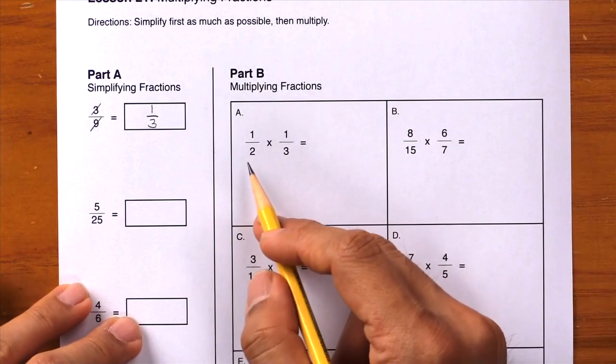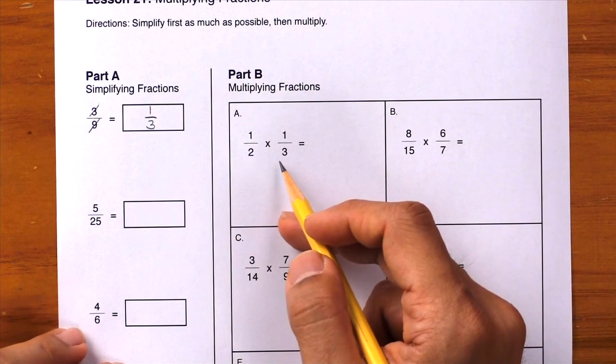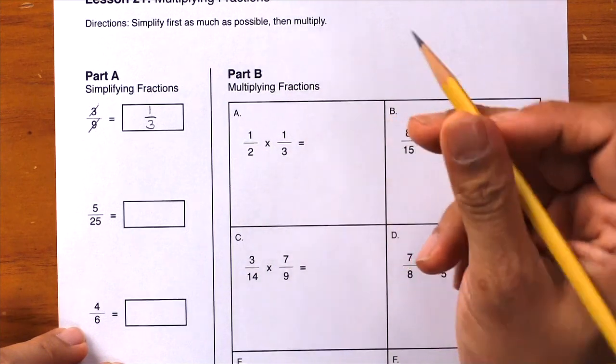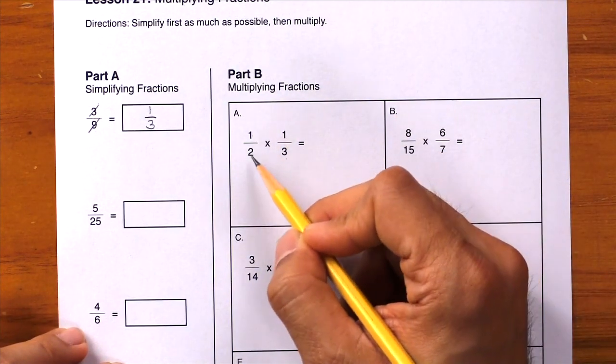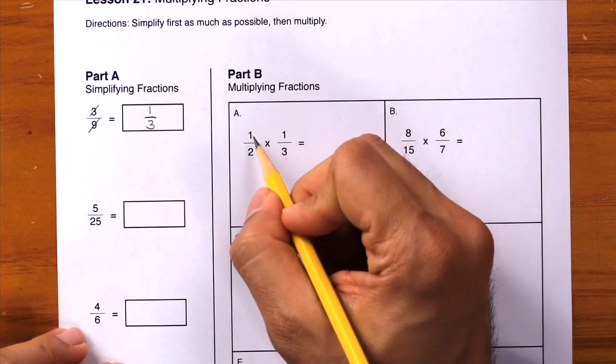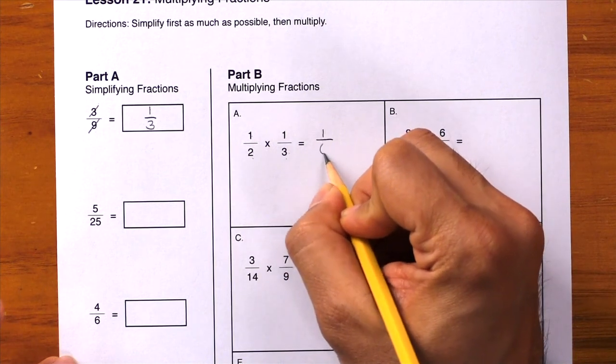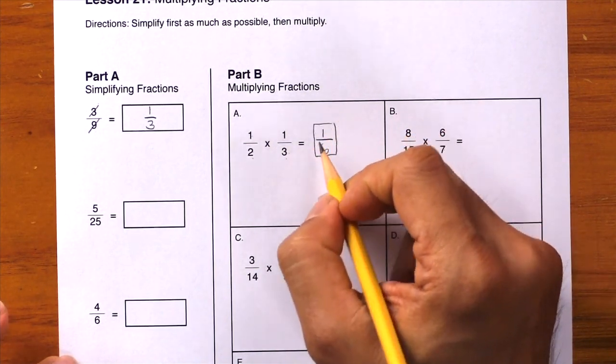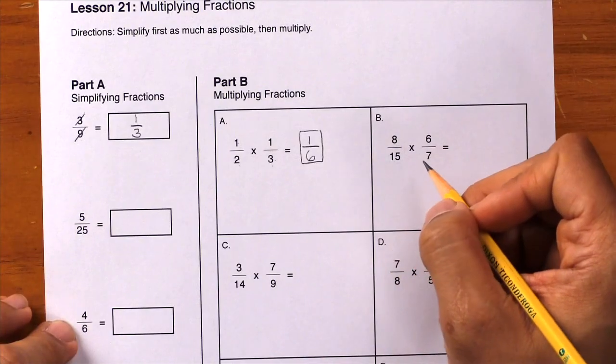Let's look at our first example from Part B. Here we have 1/2 times 1/3. Let's see if we can simplify anything first. 1/2 and 1/3 are already simplified. We can't simplify 1 and 3 or the 1 and 2, so let's just go ahead and multiply. 1 times 1 is 1, 2 times 3 is 6. Write it down and box your final answer of 1/6.